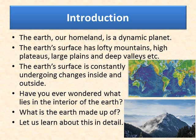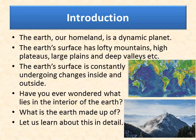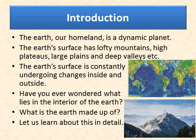We know that planet earth is made up of three main shells: the very thin brittle crust, the mantle and the core. Our earth, our homeland, is a dynamic planet — it is constantly changing. The surface is constantly changing: mountains get wear and tear, valleys get filled up, rivers get dried up. The earth's surface has lofty mountains, high plateaus, large plains and deep valleys, so the topography is completely different across areas.